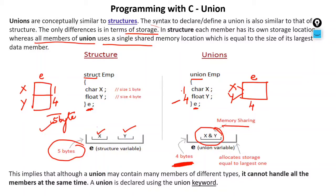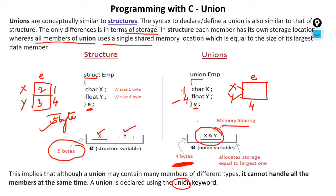Although a Union may contain many members of different types, it cannot handle all members at the same time. A structure can handle all members at the same time, while a Union cannot. You can initialize a structure variable with multiple members simultaneously, but with a Union you can only initialize one member at a time because there is only one shared memory space. A Union is declared using the keyword 'union'.